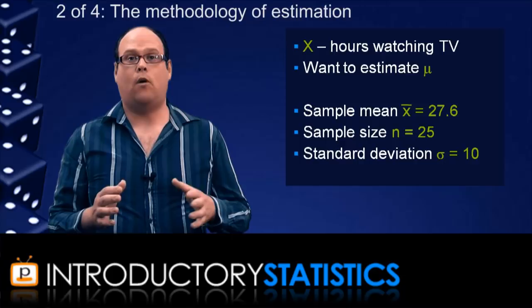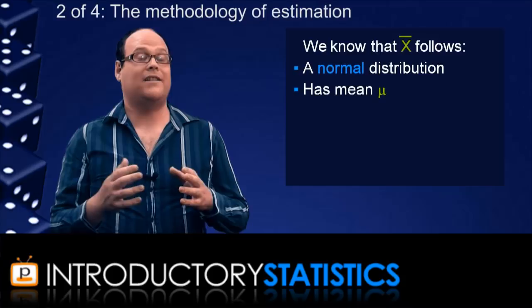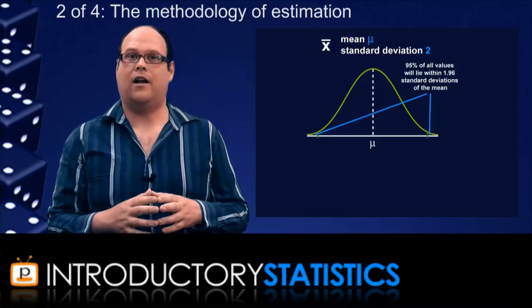We know, from what we've already learned about sampling distributions in previous videos, that whatever mu is, the sampling distribution of the mean x-bar follows the normal distribution with a mean of mu and a standard deviation that turns out to be 2. We also know, because of what we've learned about normal distributions, that 95% of all values in x-bar will fall within 1.96 standard deviations of its mean.